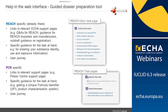With regards to help available through the guided dossier preparation tool, it is unique compared to the regular interface. If you create a REACH registration using the tool, you'll find links to relevant ECHA support pages — the Q&As for REACH, guidance for importers and manufacturers, a nutshell guidance for registration. At the task level you'll see specific task-related help; for instance, in the substance identity task you will find help specific to that task. For when PCN arrives, you will see a similar layout with links to relevant PCN support pages and specific guidance for the task at hand — for example, getting the unique formula identifier or going to a product characterization system.